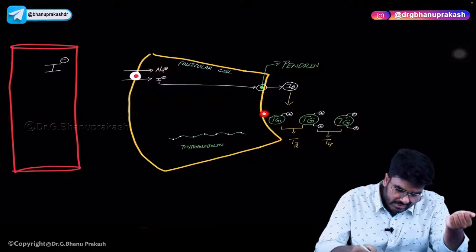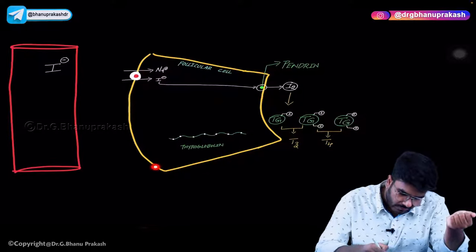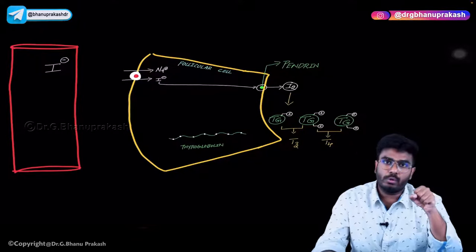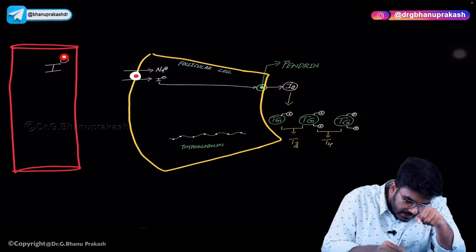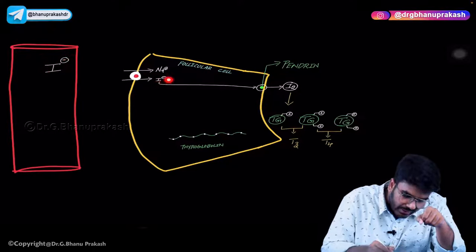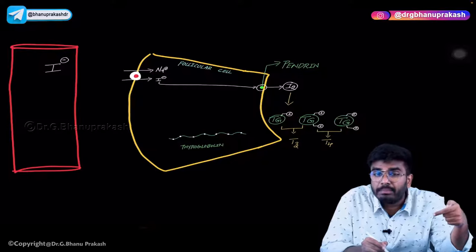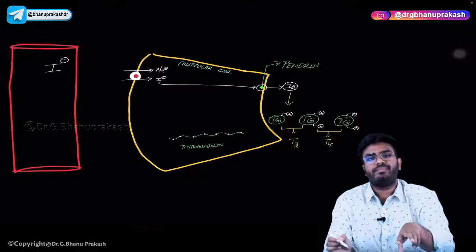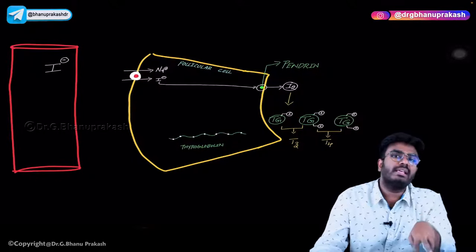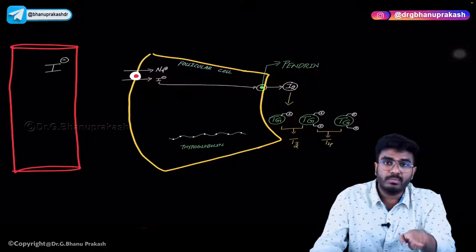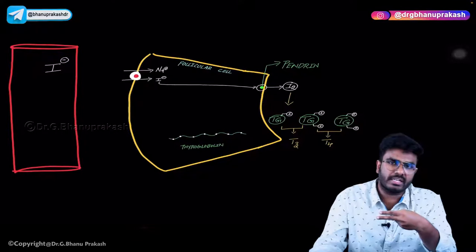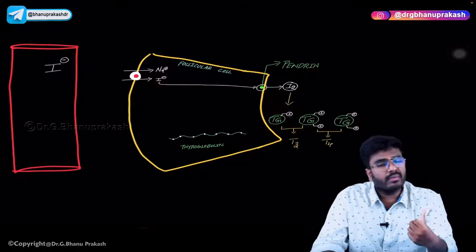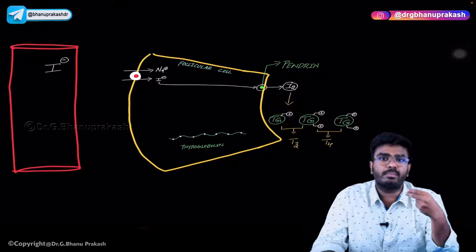The yellow-colored cell shown here is one follicular cell. This follicular cell is going to uptake iodides from the blood. This iodide uptake happens along with sodium. The transporter helping in the absorption of iodine is called the sodium-iodide symporter — 'symporter' because it transports both on the same side. The sodium-iodide symporter is present on the basolateral membrane of follicular cells.